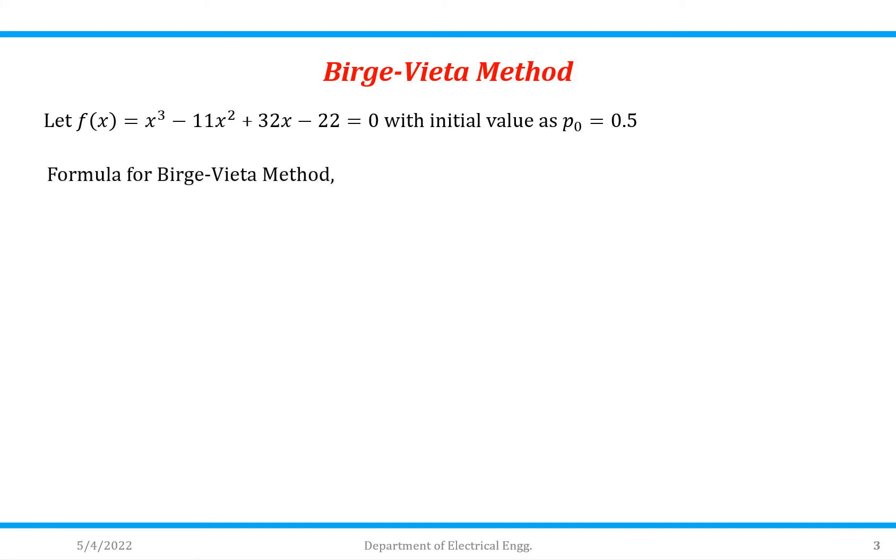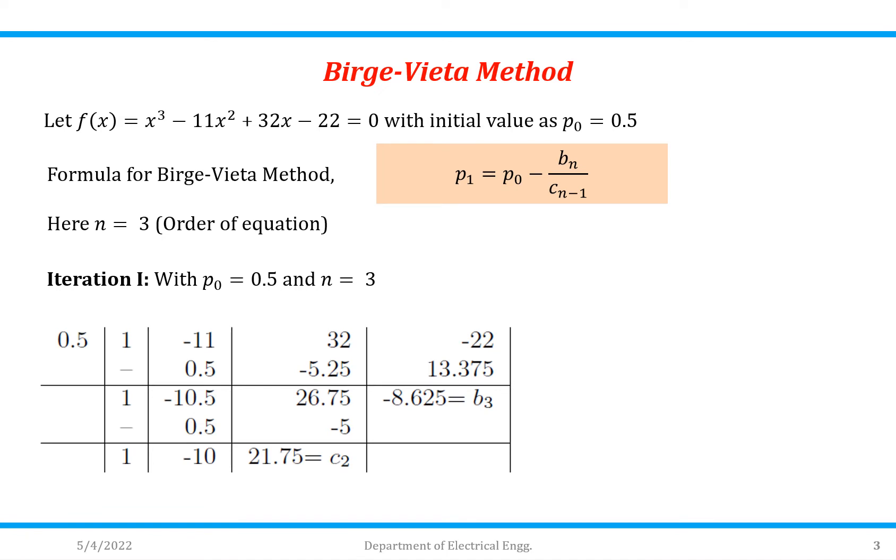So formula for Birge-Vieta is p₁ = p₀ - bₙ/(cₙ₋₁). Here n = 3, that is order of equation. So we can solve iteration 1 with p₀ = 0.5 and n = 3.